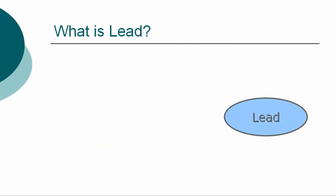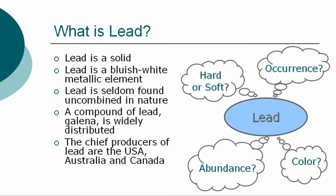What is lead? In a general overview of the element, we can at first describe lead as a solid. It is a bluish-white metallic element, which is seldom found uncombined in nature. However, a compound of lead called galena is widely distributed. The chief producers of lead are the USA, Australia, and Canada.